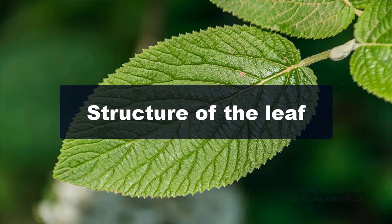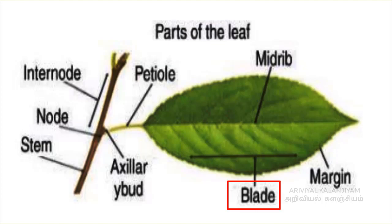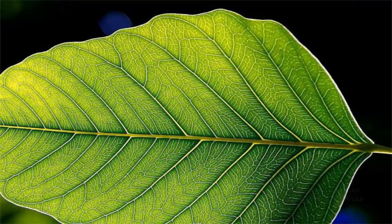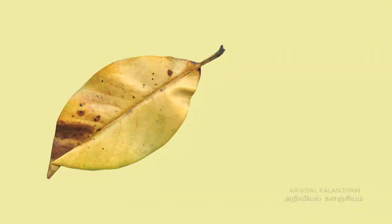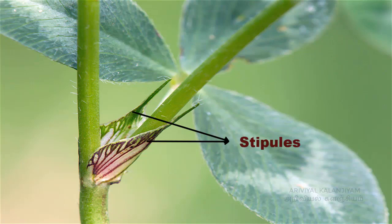A leaf is a green flat expanded structure born on the stem at the node. The leaf has a stalk called the petiole. The flat portion of the leaf is called the leaf lamina or leaf blade. On the lamina there is a main vein called the midrib, and other veins branch out from the midrib. The portion of the leaf connected in the nodal region of the stem is known as the leaf base. Leaves of some plants possess a pair of lateral outgrowths on the base on either side of the axillary bud.